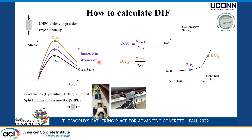For testing under higher strain rates, you can use load frames based on hydraulics or electronics, but they are limited — at some point you cannot increase the strain rate further or create ideal conditions for the true stress-strain behavior. So you look for other test methods. This presentation focuses on the split Hopkinson pressure bar, with the specimen in the horizontal location. You can see the Hopkinson bar built at Yukon with a high-speed camera, and a gas chamber which releases a striker.